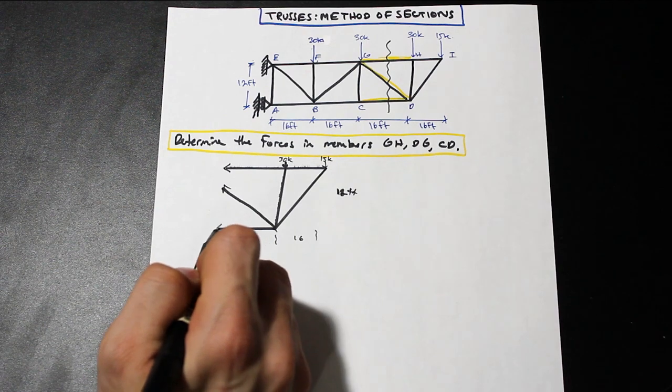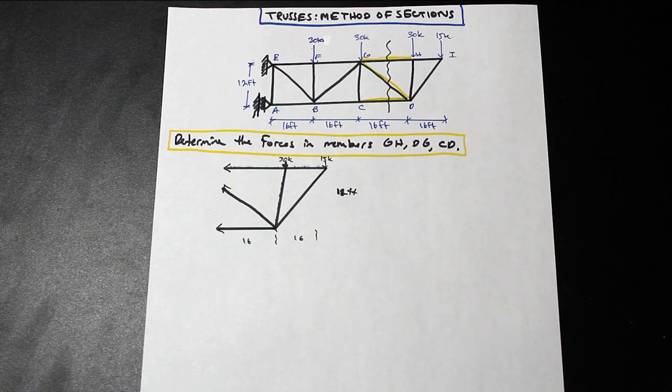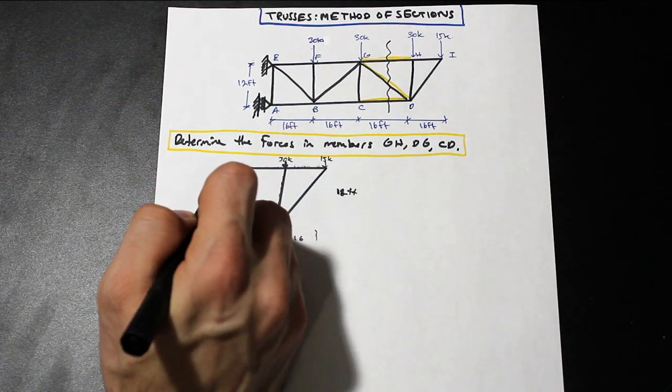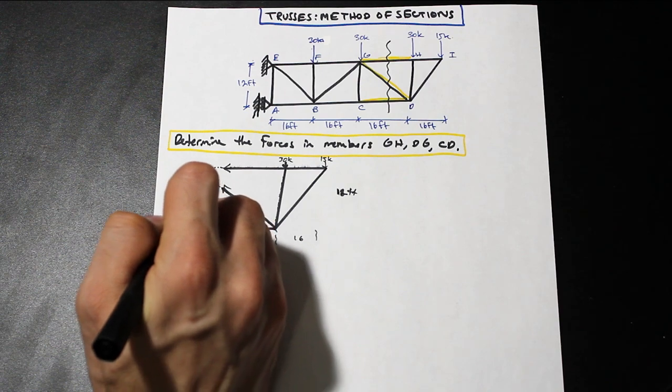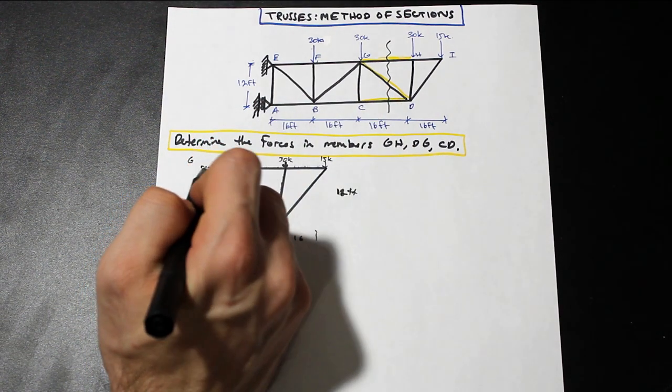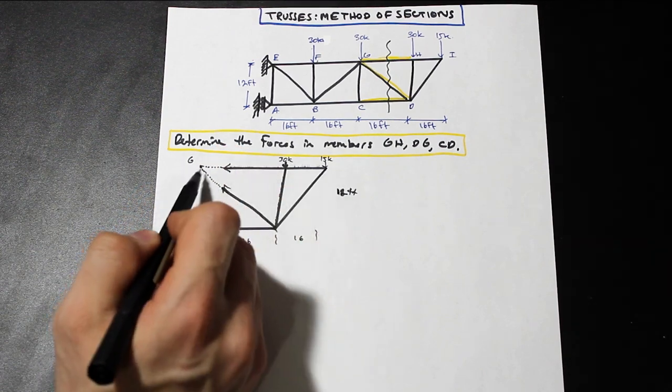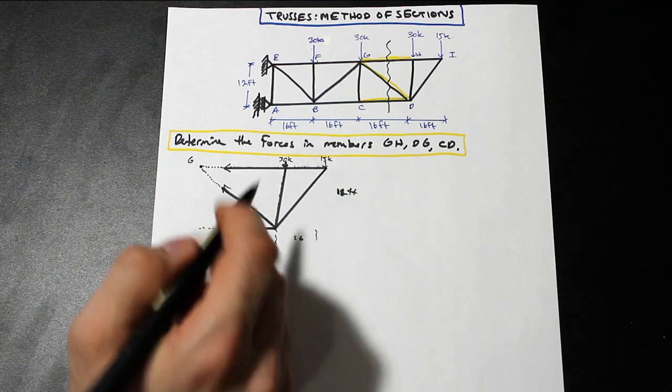So what I like to do is I like to draw arrows at the end of these forces. And what we're going to do initially is we're just going to assume that these are all in tension, and we're going to solve, and if we get a negative, then we'll know it's in compression. And what you're going to do is just draw a dotted line and continue these arrows like this until they intersect, and this is going to be our point G.